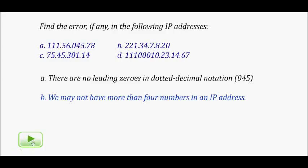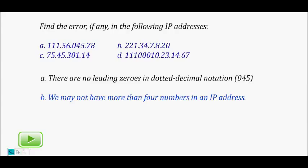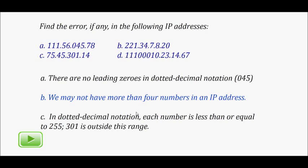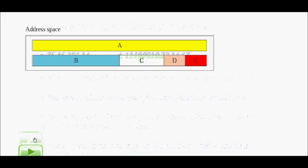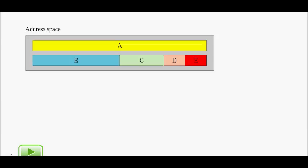You may not have more than four numbers in a dotted decimal IPv4 address. Next, 75.45.301.14 — the value 301 is more than 255, which is the highest number representable with 8 bits, so this is out of range and wrong. The final example mixes binary notation with dotted decimal notation, which is also incorrect — you must represent all parts using decimal.